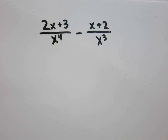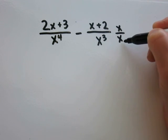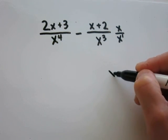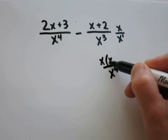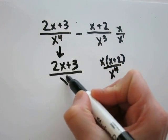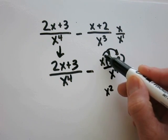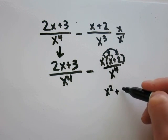Problem 21: 2x plus 3 over x to the fourth power minus x plus 2 over x cubed. Again, we need a common denominator since we are subtracting fractions. We know that multiplying x times x cubed will give us x to the fourth, since you add the exponents of the common base x. For the numerator, you will have x times x plus 2. Carry this down and distribute: x times x will be x squared — same base x, add the exponents, 1 plus 1 is 2 — and x times 2 is 2x.